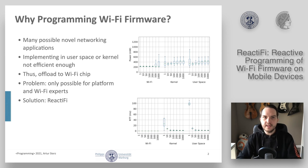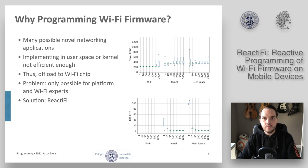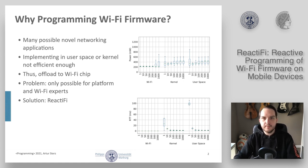First of all, let's answer the question why one would program the Wi-Fi firmware. Many applications exist that can improve users' network experience. For example, if you detect that the Wi-Fi channel is too crowded, it could be changed on the fly. Or switching from an access point-based communication to a peer-to-peer-based communication could be implemented when appropriate. With programmable Wi-Fi firmware, even new applications can be realized, such as network discovery protocols or counting surrounding devices for estimating customers in a shop. As indicated by the figures on the right, all of these examples can improve power consumption and latency significantly when implemented on the Wi-Fi firmware and not in the kernel or user space.